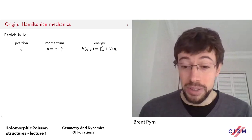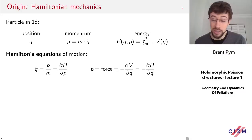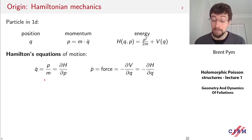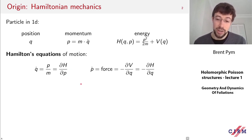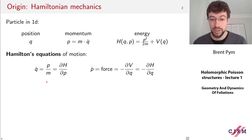Now if you want to know how the system evolves in time, you can solve the equations of motion given by Newton, but I've written them here in a slightly different form, which is the Hamiltonian form. The first equation tells us that the relationship between velocity and momentum is q-dot equals p over m, which is the derivative of H with respect to p. The time derivative of the momentum is the force, which is minus the gradient of the potential — that's minus the derivative of H with respect to q. These two equations tell us how q and p evolve in time, determining the evolution of the system.